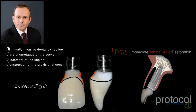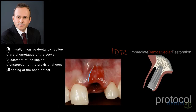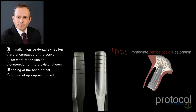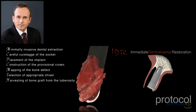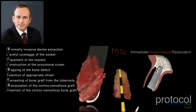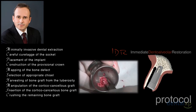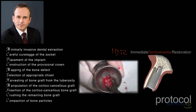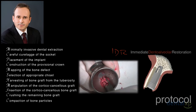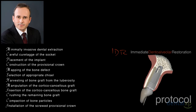The next step is construction of the provisional crown. We always fabricate the provisional crown with ideal emergence profile. After construction, we remove the provisional crown and start to map the bone defect. Before harvesting bone graft, we select the appropriate chisel — we always use manual instruments, chisels, to harvest bone graft from the tuberosity. Following the steps, we harvest the graft, reshape it according to the defect configuration, insert the cortical cancellous graft to restore the buccal wall, crush remaining bone graft to pack and fill the space between the marrow portion and the implant threads, and finally install the screwed provisional crown — everything in a single procedure.